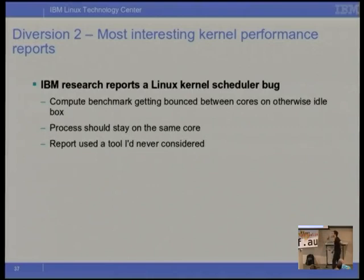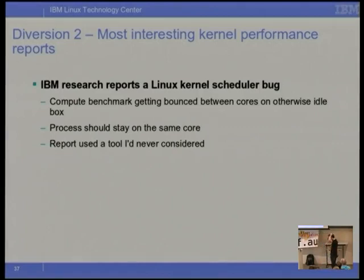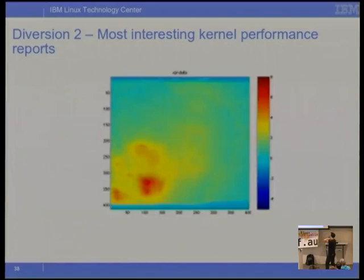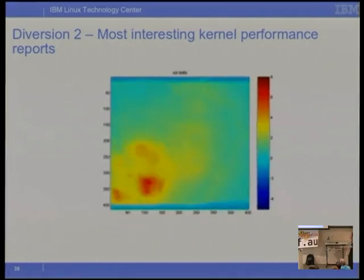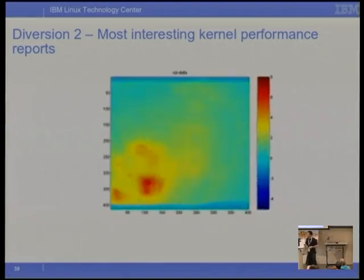Second diversion. In my years at IBM I get a lot of weird bug reports — this was probably one of the most interesting tools I've seen used. They had a compute benchmark running on one core and came to me saying there's a Linux scheduler problem, fix it. They sent me a thermal map of a CPU — an XY map of temperature across a multicore chip — and said something is moving on that chip. The compute benchmark was bouncing around where you'd hope it was sitting in one spot. That was pretty interesting.